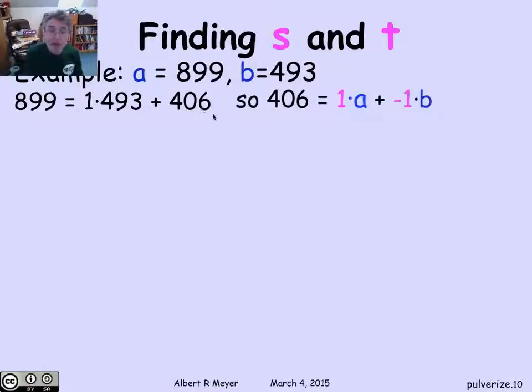406 then is, remember 899 is a and 493 is b, I'm discovering that the first remainder, 406, is 1 times a plus minus 1 times b. So now I have that first remainder expressed as the desired linear combination of a and b.